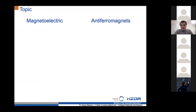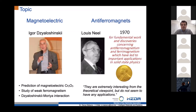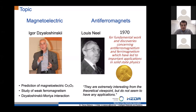My topic is basically about two words: magneto-electric antiferromagnets. If you put this into faces, these two gentlemen come to mind. Antiferromagnets is linked to the name of Neel, and magneto-electric effects in antiferromagnets, weak ferromagnetism, is of course the Dzaloshinskii-Moriya interaction, linked to the name of Igor Dzaloshinskii, who unfortunately recently passed away.